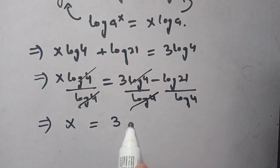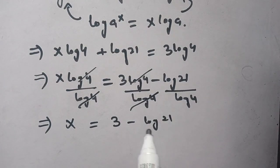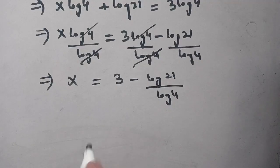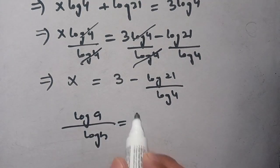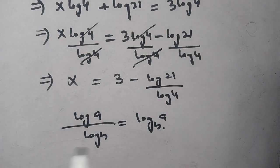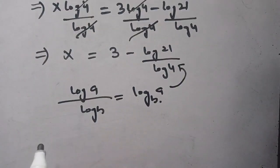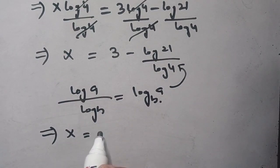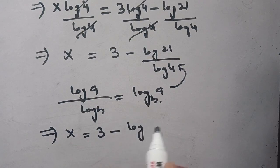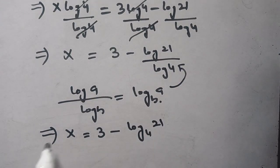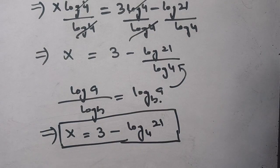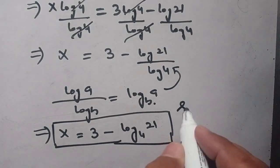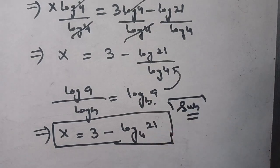We know that log(a) divided by log(b) equals log base b of a. Using this identity, x equals 3 minus log base 4 of 21, which is the required value of x satisfying our given exponential equation. Make sure to subscribe to our channel for more informative videos — see you in the next video, bye!